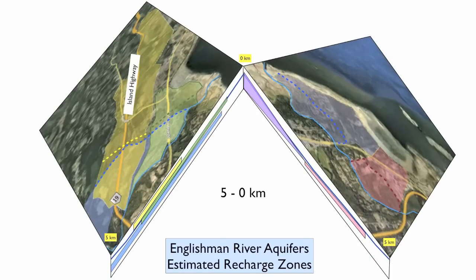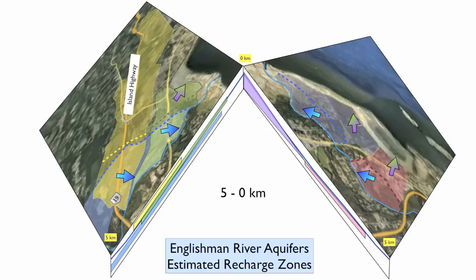We are now in the lowest section of the Englishman River, between 5 km from the foreshore and the estuary. On both sides, we show the estimated footprints of the aquifers and their respective recharge zones for which groundwater discharges to the Englishman River. Beyond the thick dashed lines, groundwater discharges directly to the ocean.